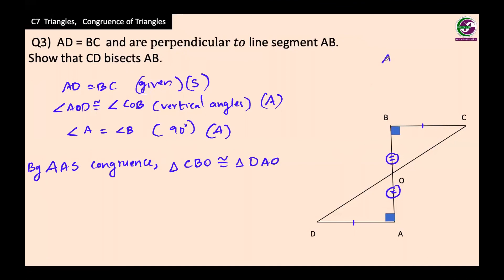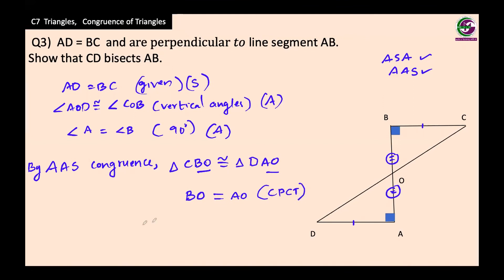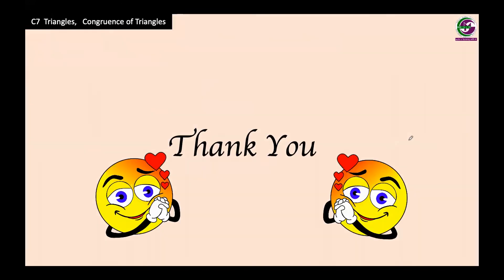ASA can also be written as AAS — both are accepted. Now regarding AO and BO: they are in the same corresponding position, so BO equals AO because corresponding parts of congruent triangles are equal. Since BO equals AO, CD bisects AB — AB is cut into two equal parts by CD. Hope that's clear. The rest of the exercise will be solved in the next period. Thank you.